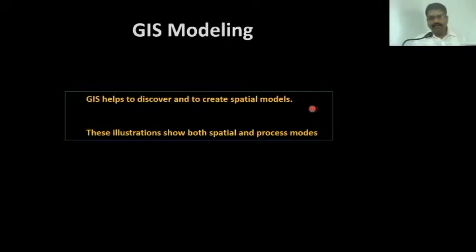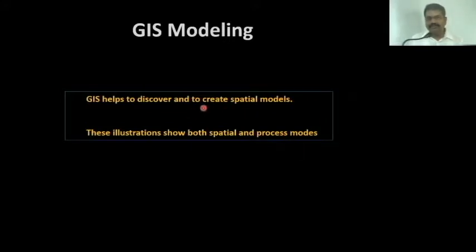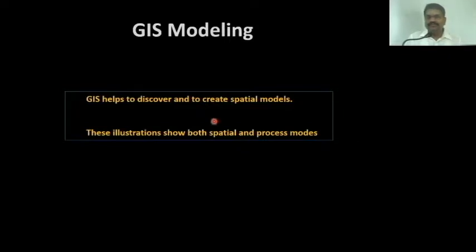The definition of GIS modeling is that it has a number of characteristics for discovering the real earth system and creating spatial models. The illustration shows both spatial and process models.